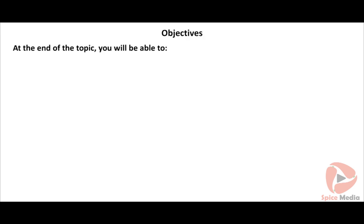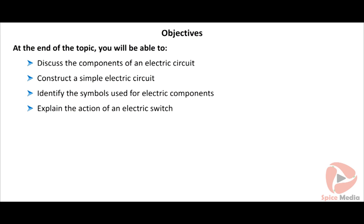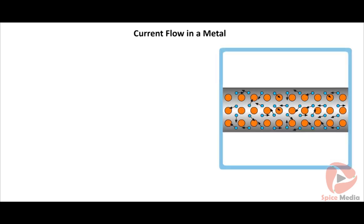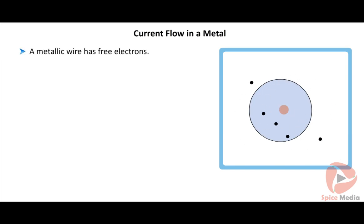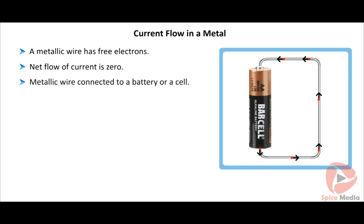At the end of this topic, you will be able to discuss the components of an electric circuit, construct a simple electric circuit, identify the symbols used for electric components, explain the action of an electric switch, and classify materials as conductors and insulators. In a metallic wire, free electrons move in all possible directions and the net flow of current is zero. But if the wire is connected to a battery, a potential difference is created and current flows through the wire.